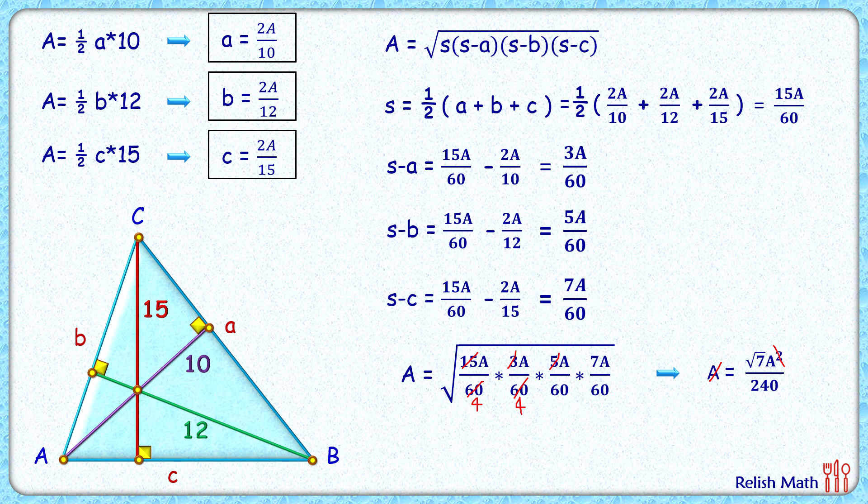Taking 240 and square root 7 to the other side, we get area of triangle as 240 divided by square root 7 centimeter square. That's our answer! I hope you enjoyed the solution. See you in the next video!